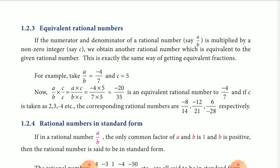Next, we are going to see about equivalent form of rational numbers. Equivalent form means any rational number can be multiplied by an integer. That is, numerator and denominator can be multiplied by the same number. For example, in our book, it is given minus 4 by 7.